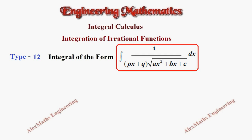So here we have two terms in the denominator. One is px + q which is a linear term, and another one is quadratic which is inside the square root — that is ax² + bx + c.